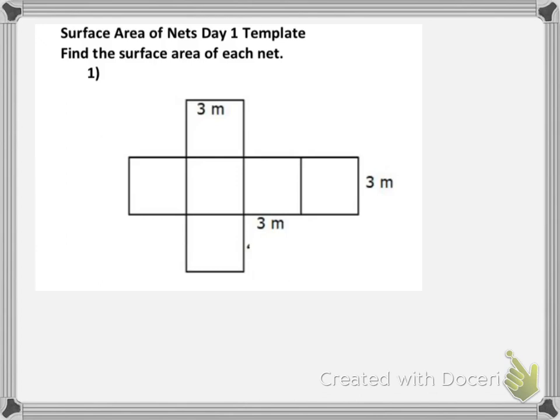So this net actually folds up into a cube. We're going to find the area of each of the faces and each of the faces is really one of these squares. Then we're going to add them all up together.